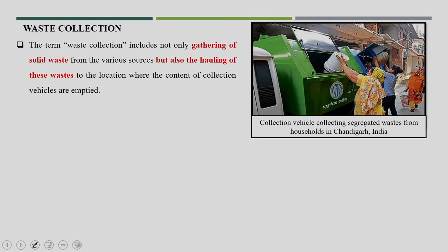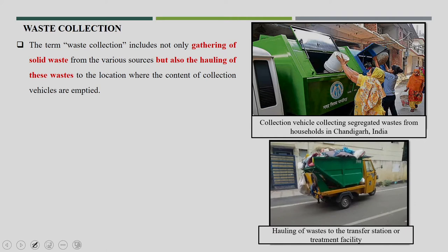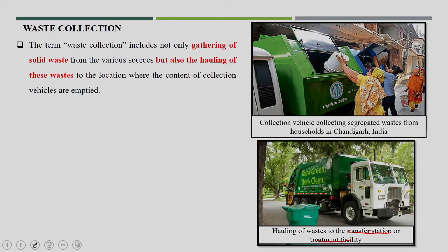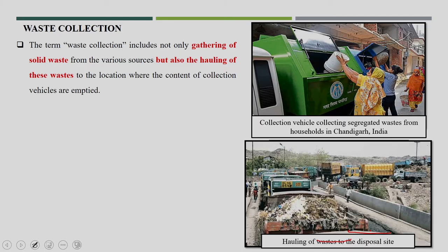Here you can see primary collection in Chandigarh — segregated waste with dry waste and wet waste collected separately. This is another kind of vehicle normally used. It is possible that the hauling of waste goes to the transfer stations or any treatment facility, not necessarily to the dustbins area or disposal site directly. Once the waste from the source goes to the transfer station or treatment facility, it will then go to the disposal facility or disposal areas. A bigger-size vehicle could also collect from the source and go directly to the transfer station or treatment facility.